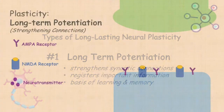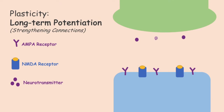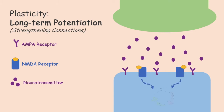Long-term potentiation occurs when excitatory neurotransmitters are released from presynaptic neurons to cause a strong depolarization of the postsynaptic cell through binding to AMPA receptors. The depolarization causes NMDA receptors on the postsynaptic side to initiate cellular mechanisms such as gene transcription to make new AMPA receptor proteins, responding to even more neurotransmitters and thus increasing the size of the connection.